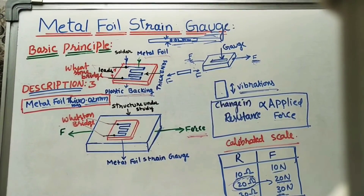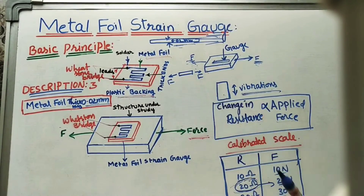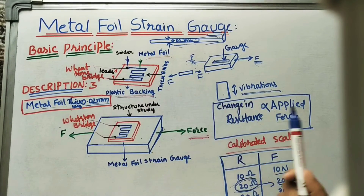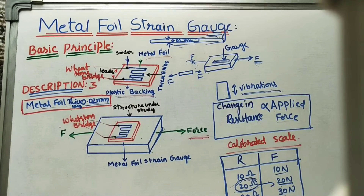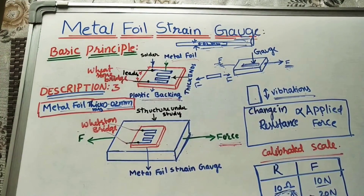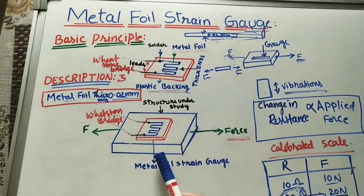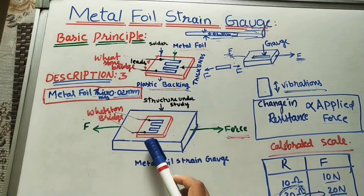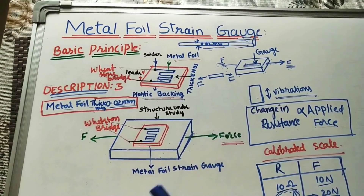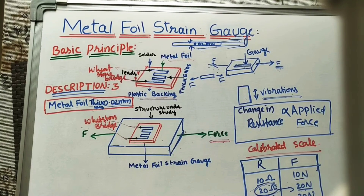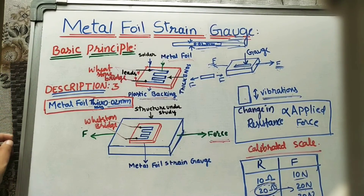The applications of this strain gauge include finding applied forces, applied pressure, or vibrations of motors, engines, or machines. Advantages are that it is lightweight, we can stick it at any place for finding forces, pressure, or vibrations, it is very sensitive, and gives correct values. The limitation is that we can only use this gauge one time — reuse is not possible. With application of force, the dimensions of the structure change, and for getting correct values we have to use it only once.